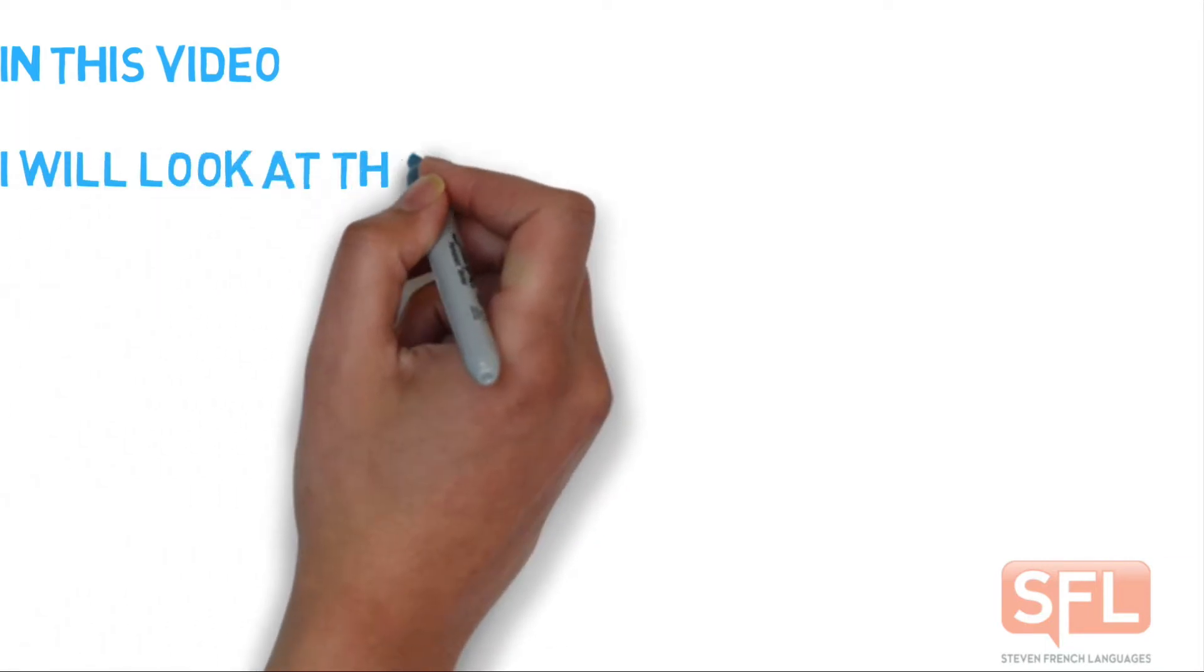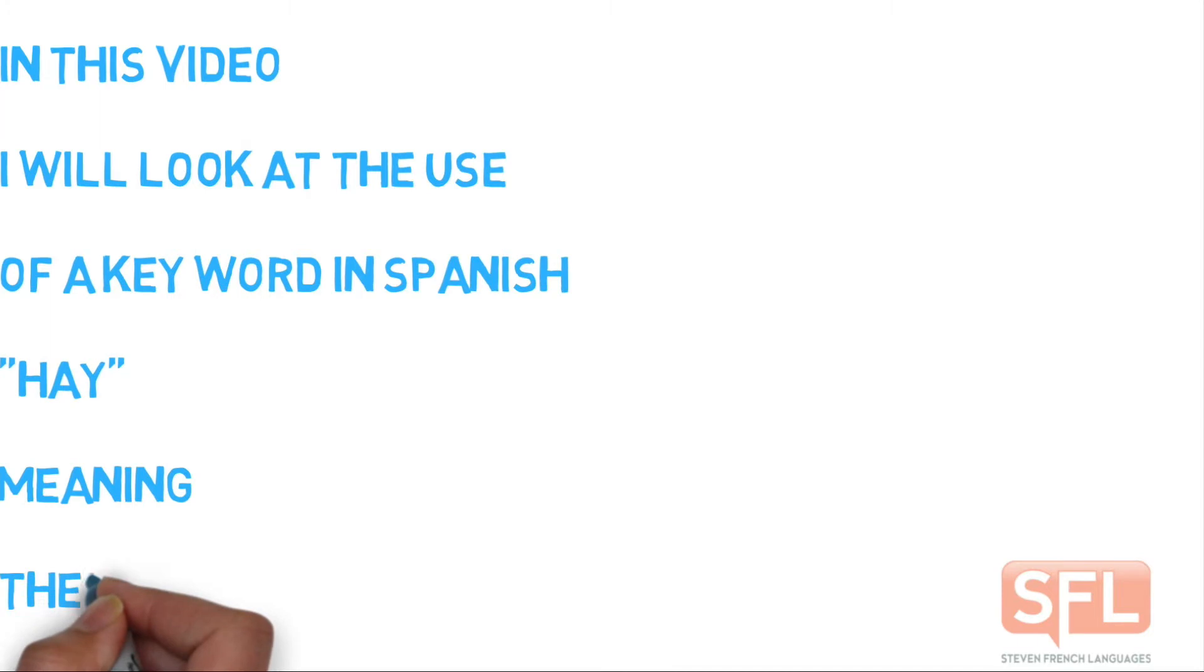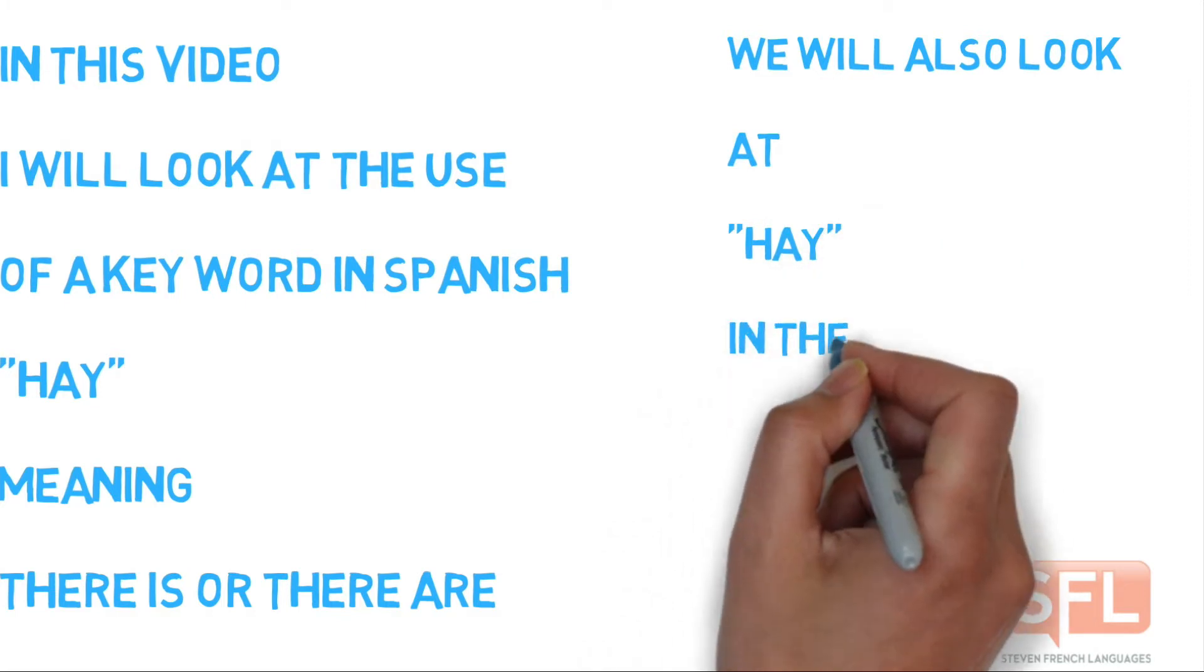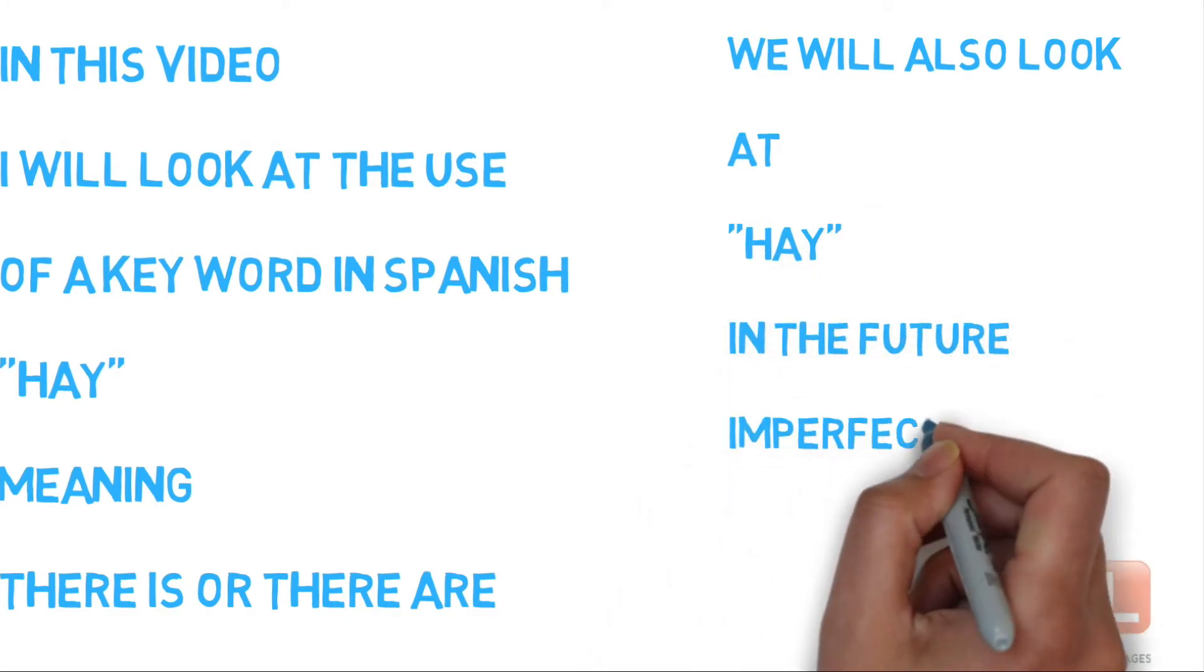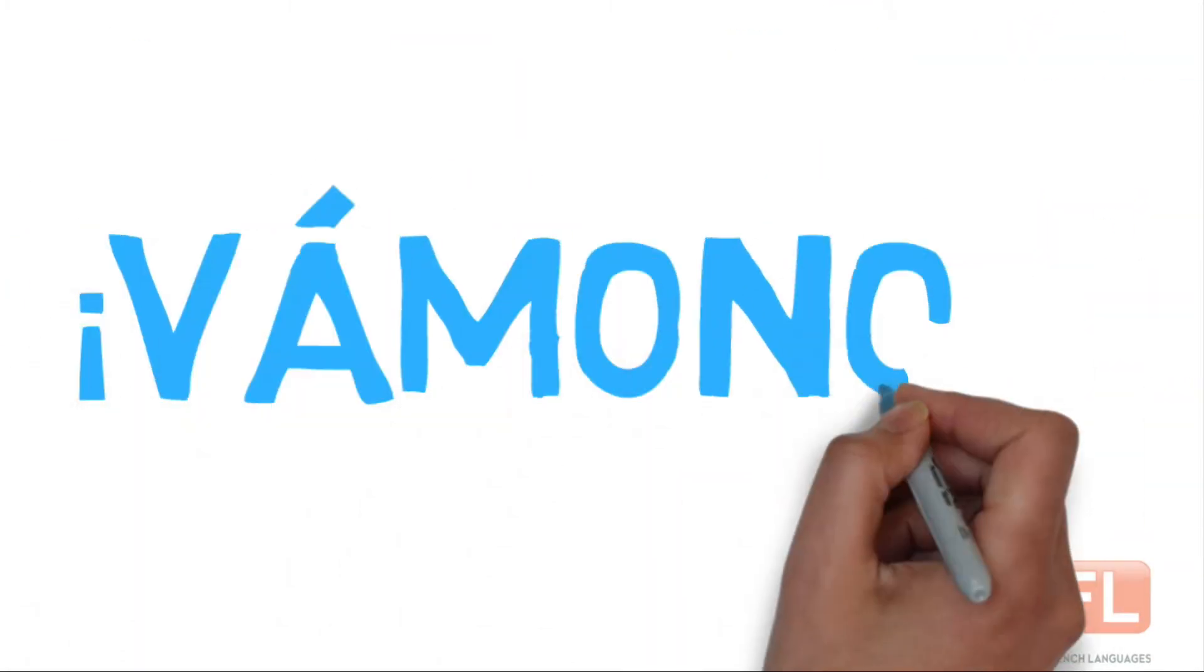In this video, I'll be looking at the use of a key word in Spanish which is hay, meaning there is or there are. And we'll also look at this hay in the future, imperfect and conditional tenses. So without any further ado, vamos.